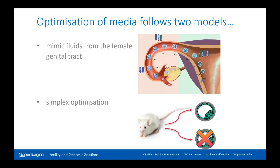Some media mimic the fluids from the female genital tract, and this is the system that underpins the sequential systems of embryo culture. The second option is simplex optimization, in which defined mouse strains are cultured in a very controlled environment with media components comprising a limited number of ingredients, and then embryo developmental endpoints are assessed and mathematically modelled.